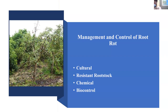Let's get to management — how to really control it. There is no way to eradicate the pathogen once it's established in your orchard, but you can mitigate and reduce it by using an integrated approach: a combination of cultural methods, chemical methods, and using tolerant or resistant rootstocks.